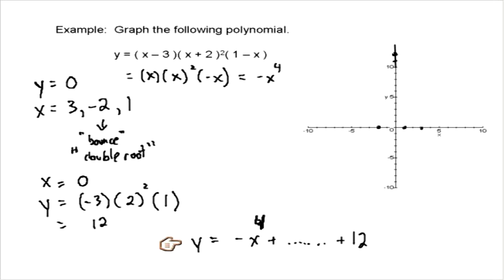So our polynomial is really negative x to the fourth plus a bunch of other stuff plus 12. And so the plus 12 tells us that that's where it crosses the y-axis. The negative 4 tells us that it starts down.